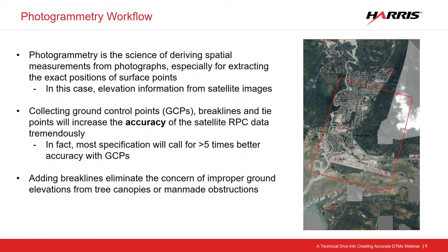Having ground control tells the satellite image itself where each position should be. Additionally, not only do we want to properly locate the imagery and refine the rational polynomial coefficient file, but before we run the automatic mass point or DTM generation, we may want to add breaklines to the imagery. Breaklines are essentially brakes in elevation so we can eliminate buildings and trees — the main concerns for DTM construction — from the equation.